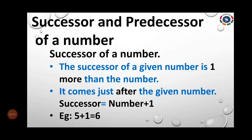Successor and Predecessor of a number. Write the heading in black. Successor of a number — write in black. The successor of a given number is one more than the number — write in blue; 'one more' write in black. Next point: it comes just after the given number — 'after' write in black, remaining in blue. Successor = number + 1 — write in black. Example: 5 + 1 = 6.